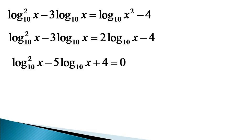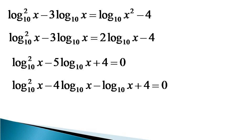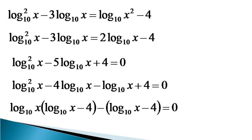In this form, the equation is actually a quadratic equation in log x, so we can solve it using the factorization method. We write the equation as log x squared minus 4 log x minus log x plus 4 is equal to 0 — decomposing minus 5 into minus 4 and minus 1. Taking log x common from the first two terms and minus sign common from the last two terms gives: log x times (log x minus 4) minus (log x minus 4) is equal to 0.